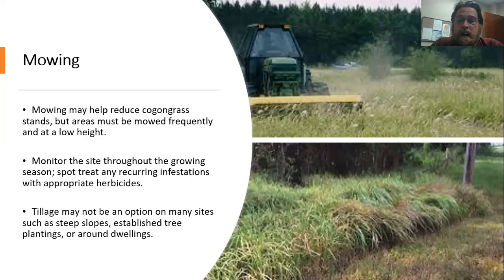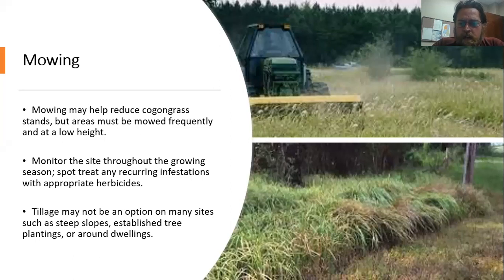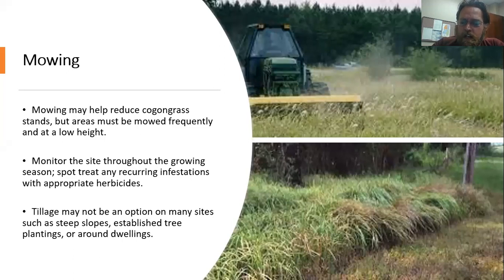After mowing down, use herbicides as a spot treatment. In areas where possible, tillage has been used to control Cogongrass — tilling down to six to eight inches and continually tilling that area, being careful not to distribute rhizomes and cleaning equipment. In a lot of home landscapes, tillage isn't really possible, so mowing and herbicides are the controls needed.